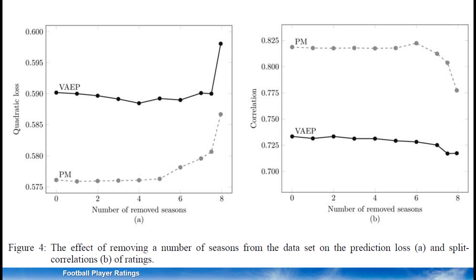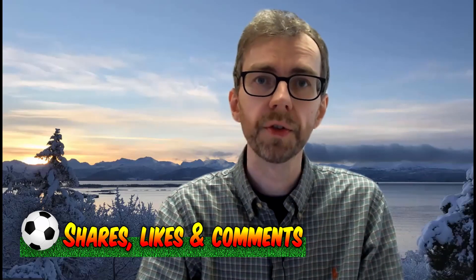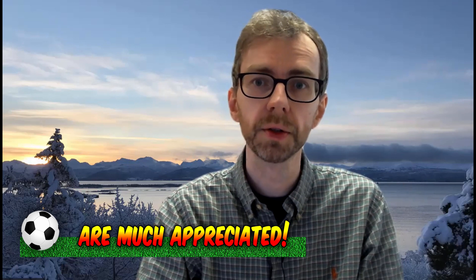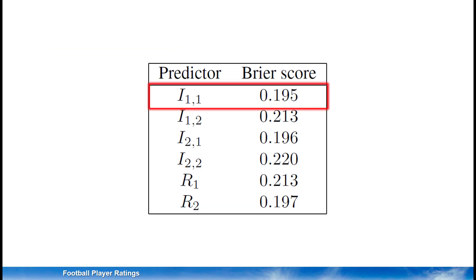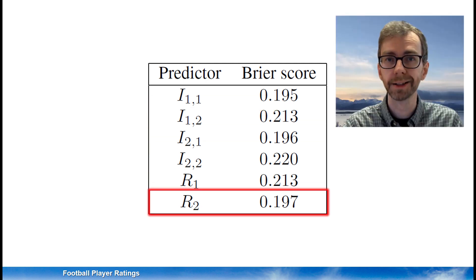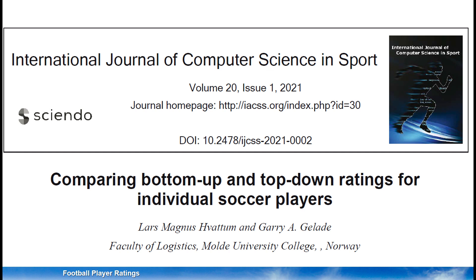Part of why this was surprising to me was that some years earlier I had co-supervised some master students who had created bottom-up ratings themselves using data from the Norwegian top division. The principles behind these bottom-up ratings were quite similar to those of VAEP. Using these bottom-up ratings, the students found that predictions from the best bottom-up ratings were actually slightly better than predictions based on odds from the betting market — and the predictions from plus-minus ratings are not as good as the predictions in the betting market. So before making this study, I really thought that VAEP would be a lot better, and that plus-minus could only compete when being allowed to use data from a lot more matches.